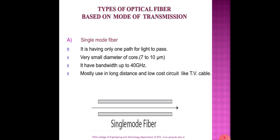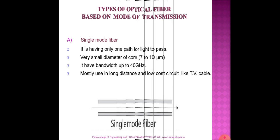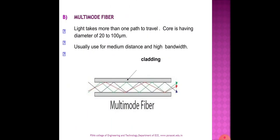Based on the mode of transmission, optical fiber cables are categorized into two types: single mode fiber and multimode fiber. Single mode fiber has only one path for light to pass, with a core diameter of only 7 to 10 micrometers and a bandwidth of up to 40 gigahertz. It is mostly used for long distances and in low-cost circuits such as TV cables. In multimode fiber, light takes more than one path. The core diameter is 2200 micrometers, used for medium distances, and it has a high bandwidth.